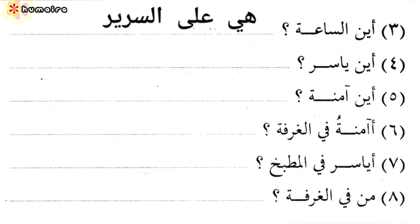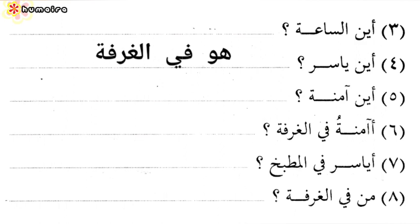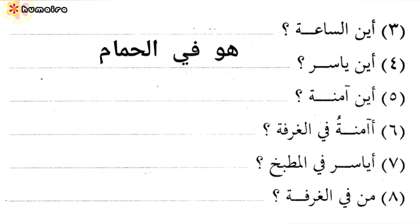هي على السرير — It is upon the bed. Number 4: أين ياسر? Where is Yasir? هو في الغرفة — He is in the room. Or you could say هو في الحمام — He is in the bathroom.